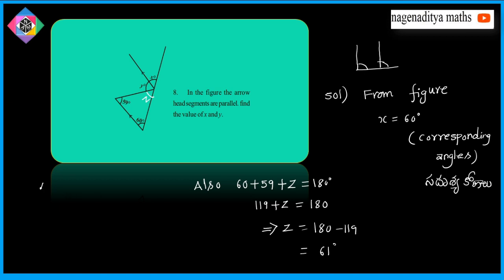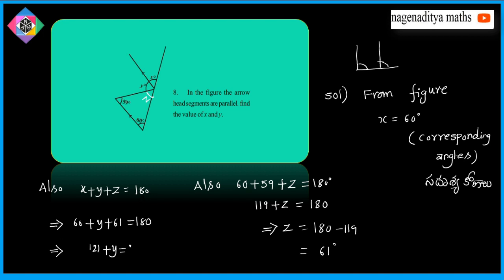Also, X plus Y plus Z is equal to 180 degrees — straight angle. Substituting, 60 plus Y plus 61 equals 180. So 121 plus Y equals 180, which implies Y is equal to 180 minus 121, that is 59 degrees. Therefore, X is equal to 60 degrees and Y is equal to 59 degrees.